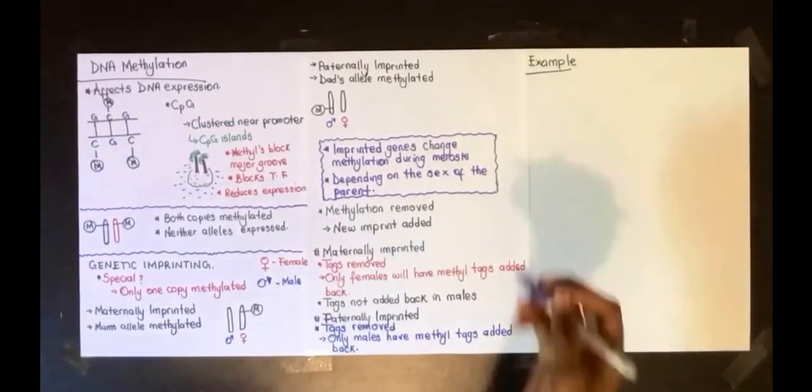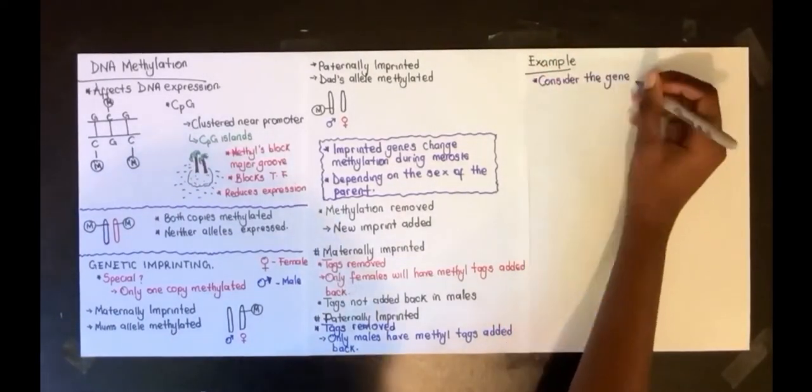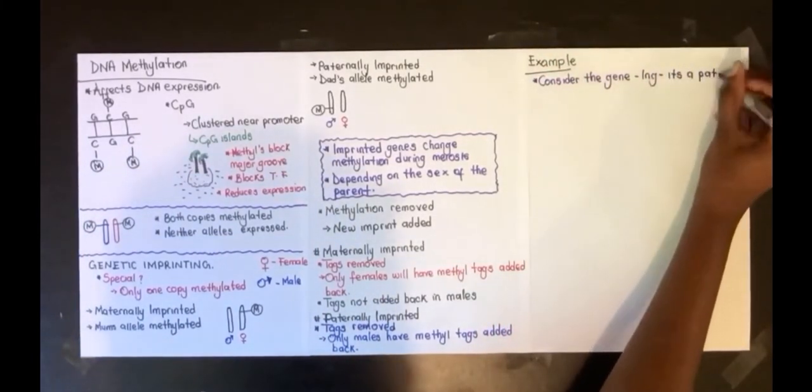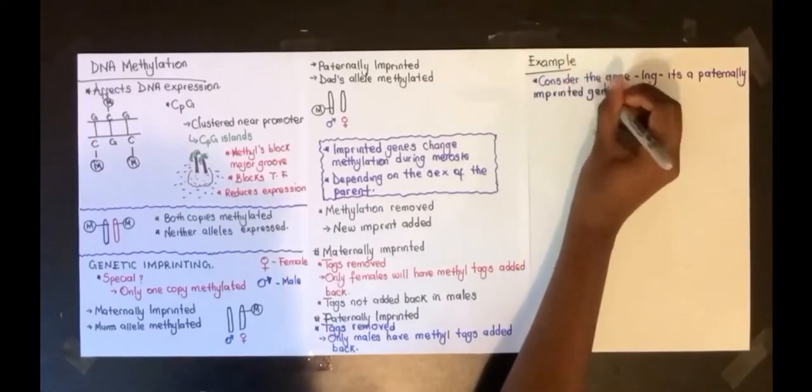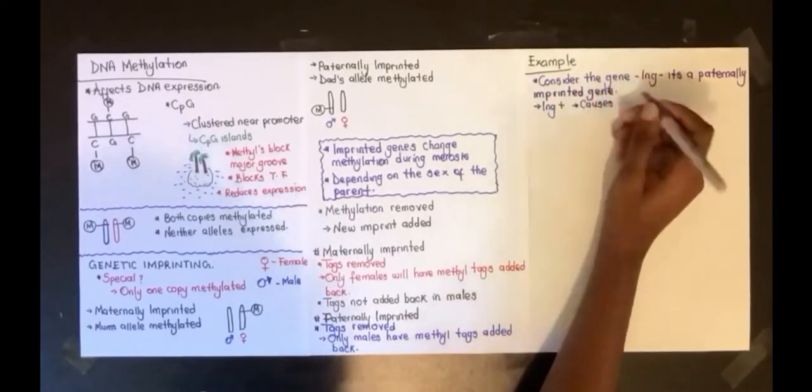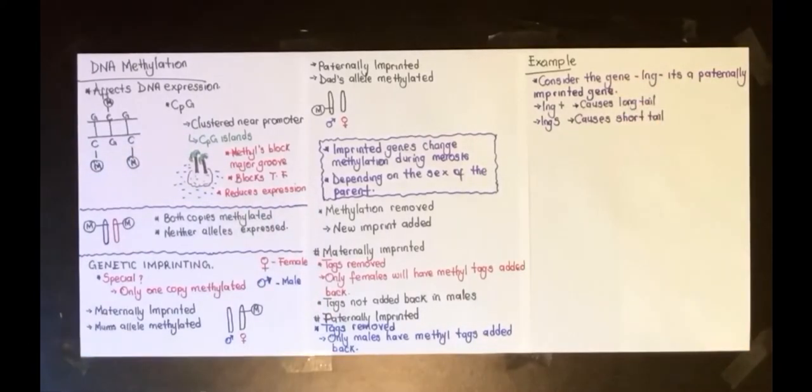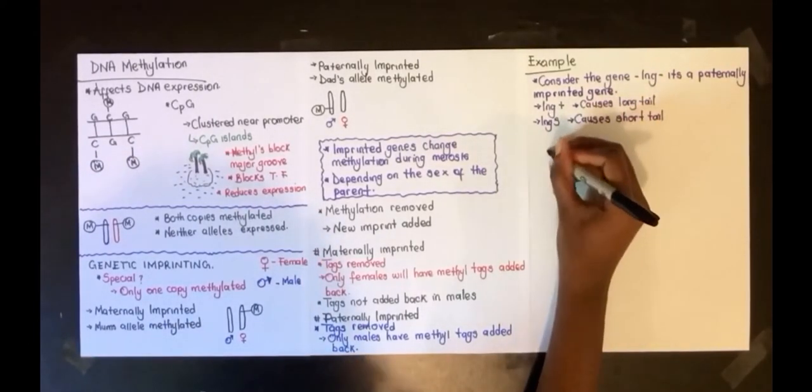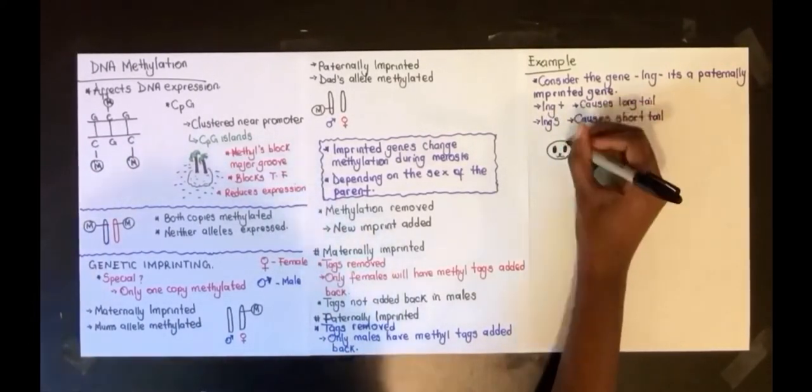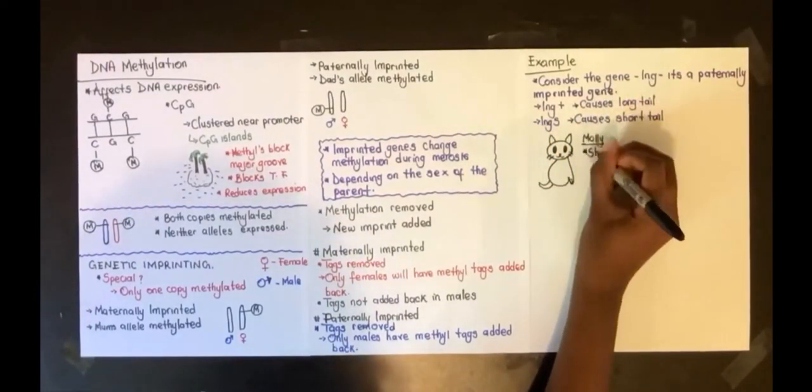Let's consider this gene. It's called the long gene, and it's a paternally imprinted gene. It has two versions: long plus, which causes cats to have long tails, and long S, which causes cats to have short tails. Your cat Molly has a short tail, but she recently had a kitten that had a long tail, and the daddy cat also has a short tail.